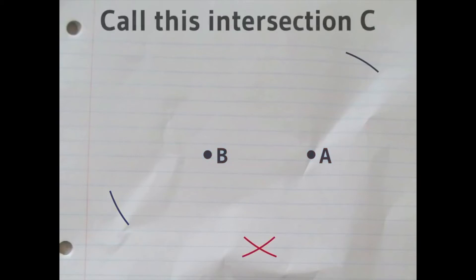The third step, well, we'll give this intersection point a name. We'll call that C.